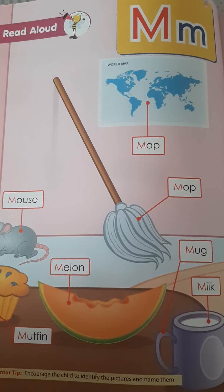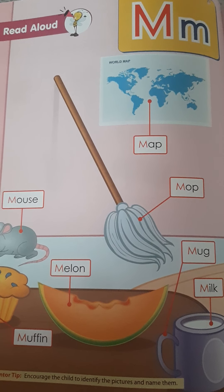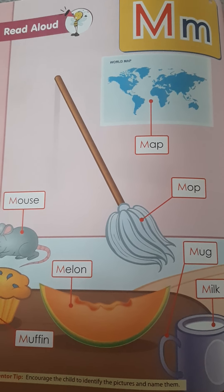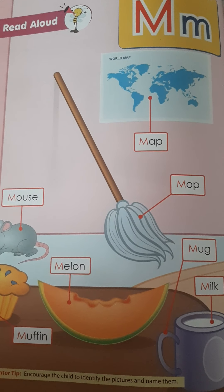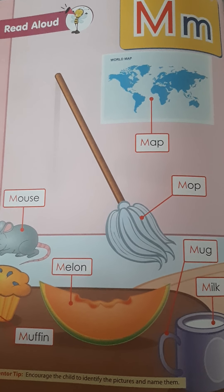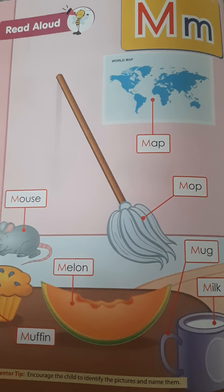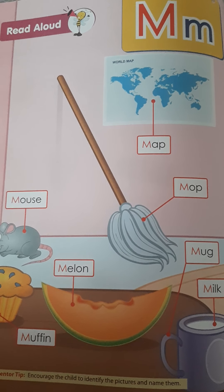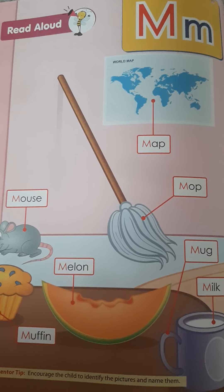H — house. I — insects. J — joker. K — king. L — lion. M — monkey. N — nose. O — octopus.